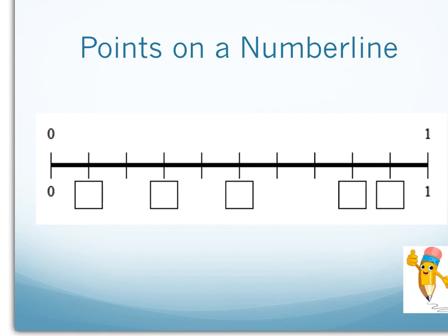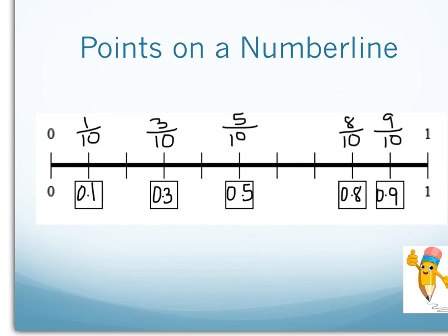Look at this number line. Is it split into tenths or hundredths? Can you label these points? Give it a shot. This number line was split into tenths. Notice that each space represents a tenth: one tenth, two tenths, three tenths, four tenths, five tenths, and so on until you get to ten tenths, which is the same as one whole.